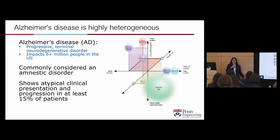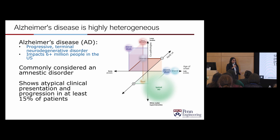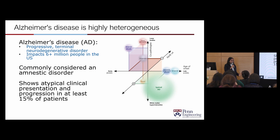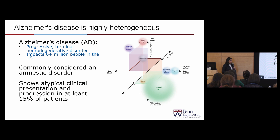Alzheimer's is the most common kind of dementia, but there's more to dementia than just Alzheimer's. It's commonly considered an amnestic disorder — you think of someone losing the ability to remember where their keys are or whether they turned off the stove. It's often associated with memory, but this isn't always the case. We see a lot of what's called atypical Alzheimer's disease in about 15% of patients, where you observe more behavioral or language or personality changes.